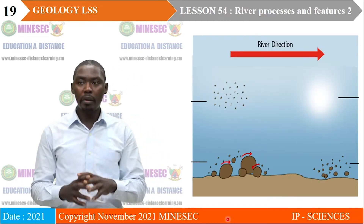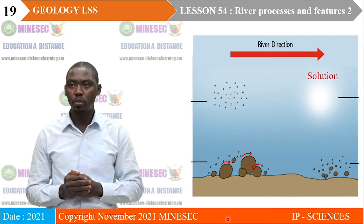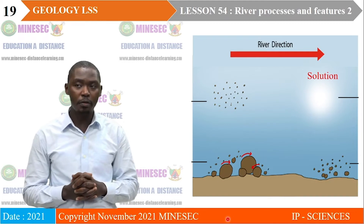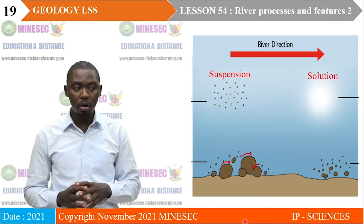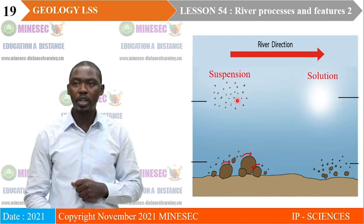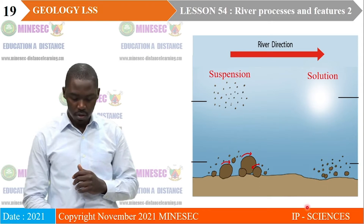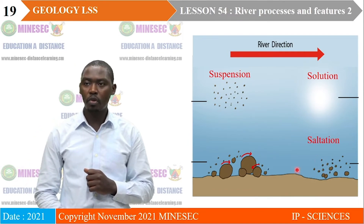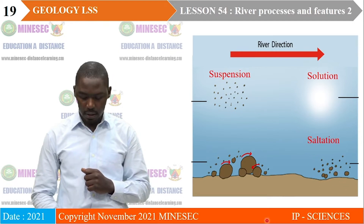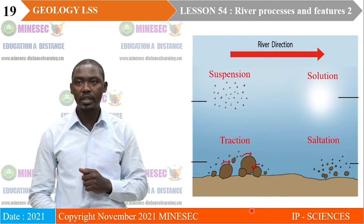We now look at a general diagram summarizing the four types of transportation described above. Here we have solution — components are in ionic form, so no visible particles. Next is suspension — particles carried aloft in suspension. Here is the direction of river movement and here is the river's bed. Then saltation — particles given a series of leaps and drops, some in suspension, others on the river's bed. Finally, larger blocks of rock are moved in close contact with the river's bed through traction.